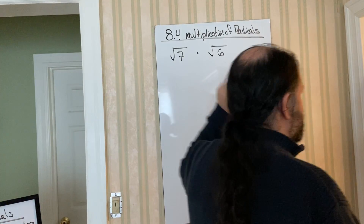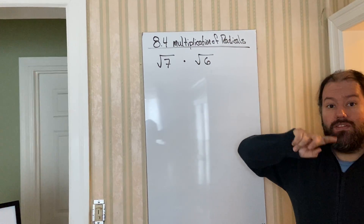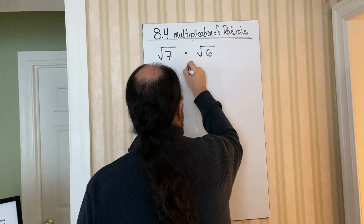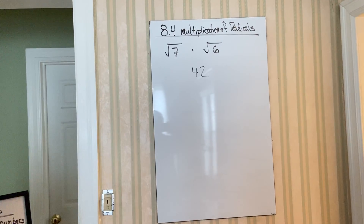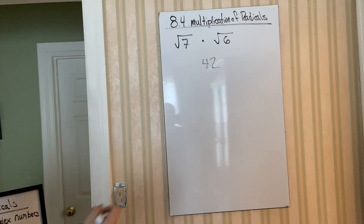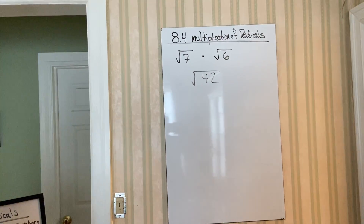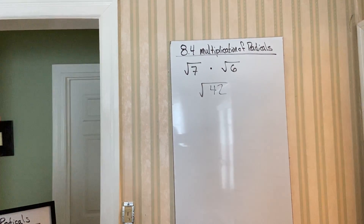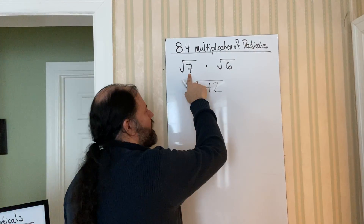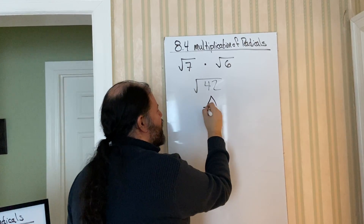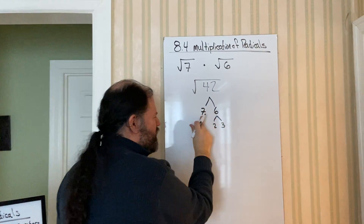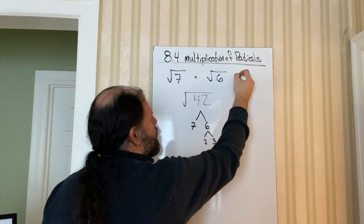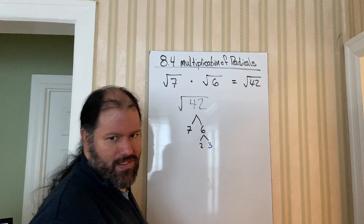For this first example, as long as we have the same index — square root times square root — we're good to go. Multiply inside stuff with inside stuff: 7 times 6 is 42. Keep the same radical sign, so it's square root of 42. There are no outside numbers, so nothing to worry about there. Now check if we can simplify. Breaking down 42: it's 7 times 6, and 6 is 2 times 3. There are no pairs we can take out, so our final answer is just the square root of 42.